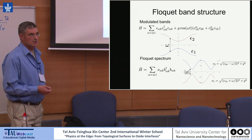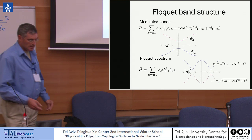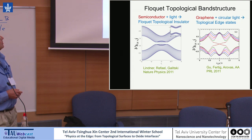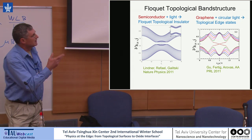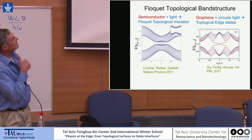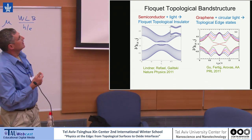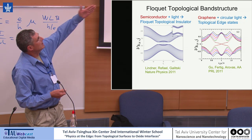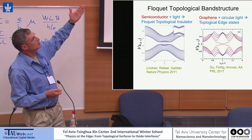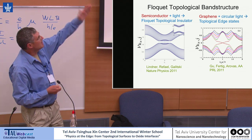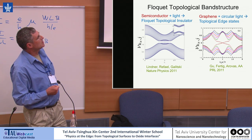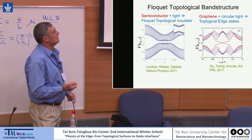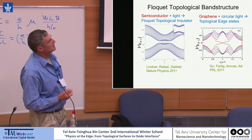One asks what does this band structure tell you. As Netanel Lindner and collaborators showed, and Herb Fertig with his collaborators showed — including myself — you can get topological band structure from relatively benign band structures, like a semiconductor with spin-orbit coupling. When you transform it under radiation, it becomes topologically non-trivial. You can see edge states in the gap formed by the radiation. And in graphene, you can turn non-topological graphene into topological graphene with edge states that carry currents, using the Floquet transformation.